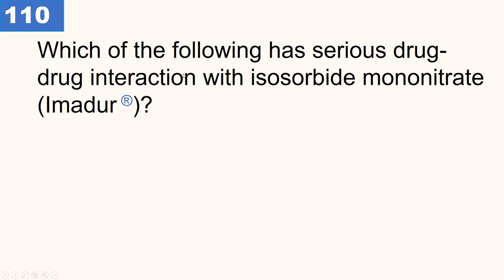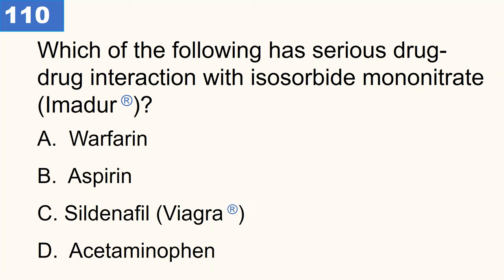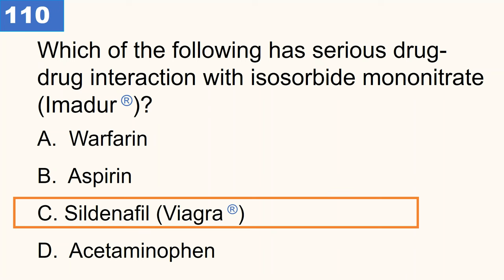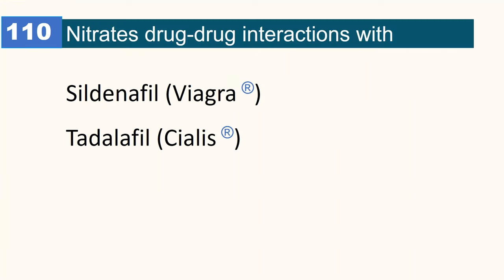Which of the following has a serious drug interaction with isosorbide mononitrate brand Imdur? Sildenafil brand Viagra. Isosorbide mononitrates are a type of nitrate class of drugs. If given with sildenafil, they can cause a serious drug interaction — they can drop blood pressure dangerously low, causing hypotension.